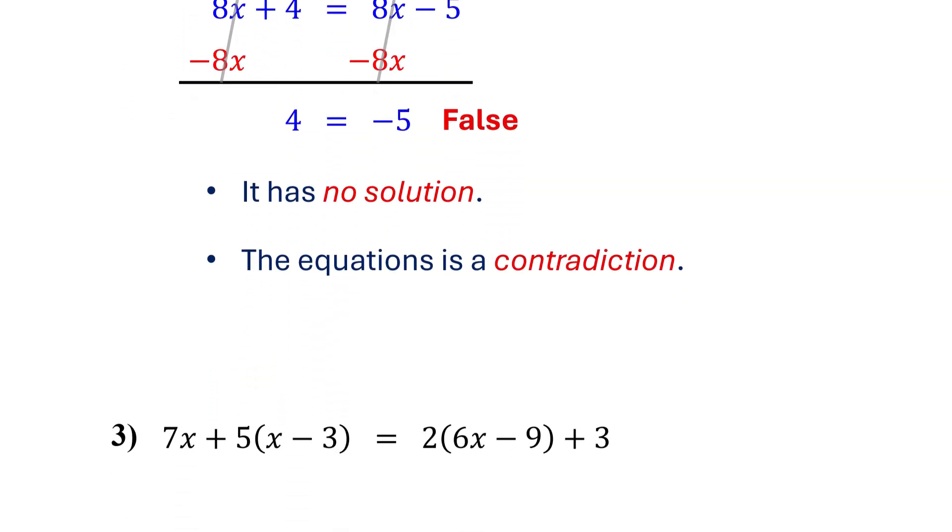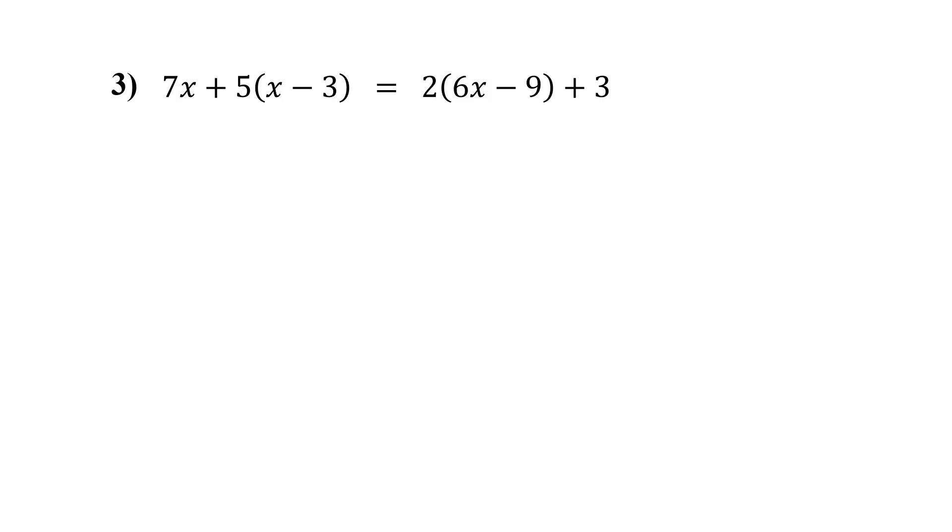Let's move on to our final example and figure out what kind of equation it is. First, get rid of the parentheses on each side using the distributive property. On the left, distribute the 5. 5 times x is 5x and 5 times negative 3 is negative 15. On the right, distribute the 2. 2 times 6x is 12x and 2 times negative 9 is negative 18.